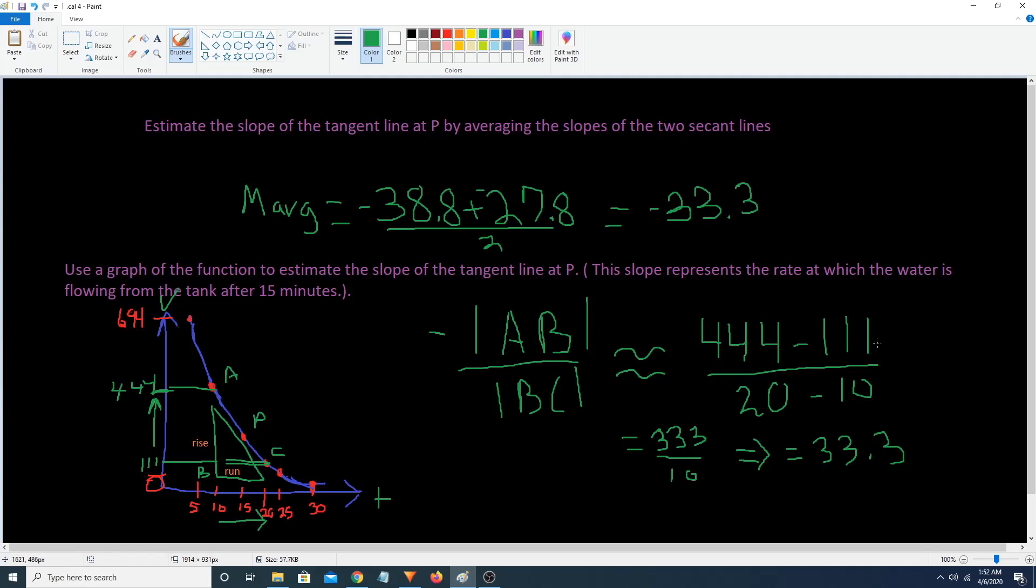Now all we have to do is the math. So 444 minus 111. 20 minus 10. 333 divided by 10. And that ends up equaling 33.3. And meters per second. And this would be our instantaneous velocity.